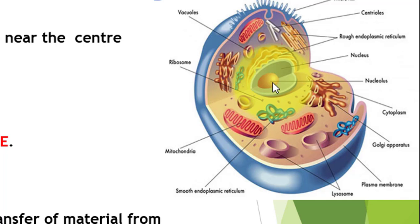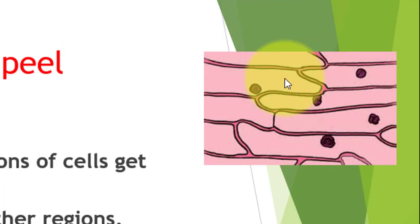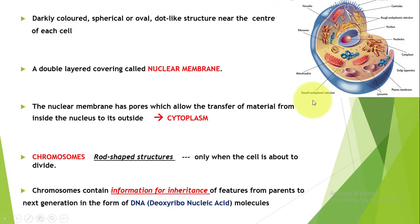In today's video we will study this nucleus in detail. It is double layered. Just like there is a cell wall around the cell, around the nucleus there is also a double layered covering called the nuclear membrane. It has pores which allow the transfer of material from inside the nucleus to its outside, into the cytoplasm.